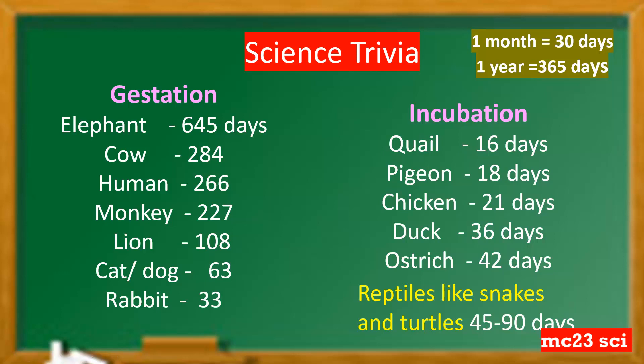For incubation — the period from laying the egg to hatching: quail takes only 16 days, pigeon 18 days, chicken 21 days, duck 36 days, ostrich 42 days, and reptiles like snakes and turtles take 45 to 90 days.